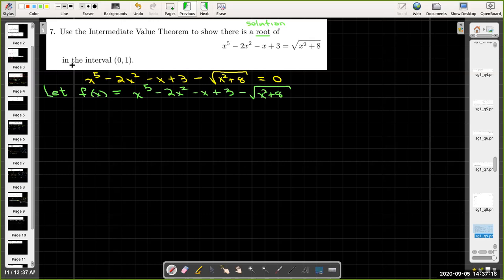Now, if this is a true statement then I should be able to show that the sign of my function values at the endpoints are different. One will be positive, one will be negative. It doesn't matter which one is positive, which one is negative. What matters is that they have different signs.